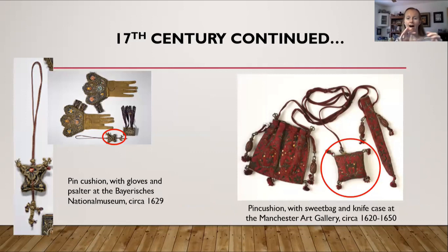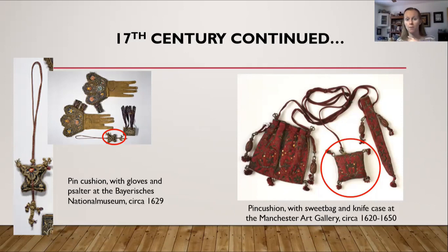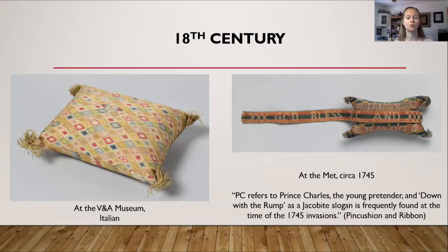More examples from the 17th century: on the left is a pin cushion shown alongside gloves and a psalter — I've circled and enhanced it to show its hourglass shape, still attached to a cord a lady would have worn. On the right is a pin cushion from the Manchester Art Gallery, dating to about 1620 to 1650, shown with a larger drawstring sweet bag and a knife case. Both pieces feature embroidery over the fabric and are held by cords.